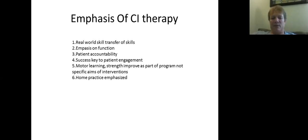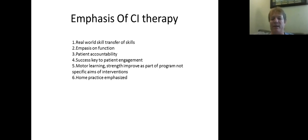Some important things about CI therapy: emphasis on real-world transfer of skills, emphasizing function, patient accountability through home skill assignments, the behavioral contract, the Motor Activity Log at the start of each session, and checking that homework has been done. You must select activities that are not too hard — particularly in the first four or five days. If you start too hard you'll disengage the patient quickly. Motor learning and strength are not primary purposes, though both improve as part of the program. Home practice is strongly emphasized.